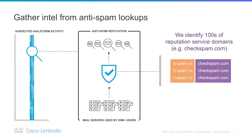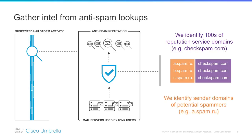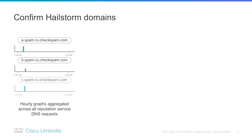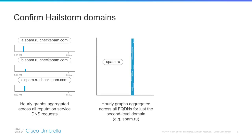Here we see a fictitious anti-spam reputation service named checkspam.com that is queried by our users. It turns out that the FQDN in question is part of the query sent to these services — for example, spam.ru, spam.ru, etc. We isolate the suspect hailstorm FQDN from the queries and collect in the region of a hundred thousand suspicious domains per hour, and sometimes even more. Every hour the model graphs query volume per suspect domain sent from numerous mail servers, and by automatically aggregating these graphs we determine whether this shows the signs of a typical hailstorm-based sender domain.